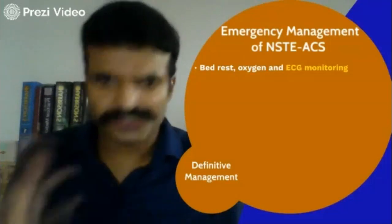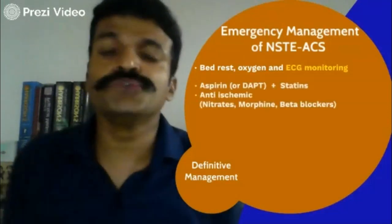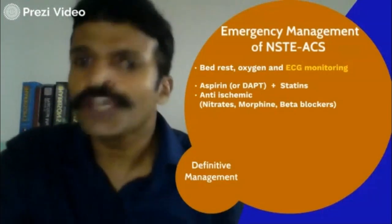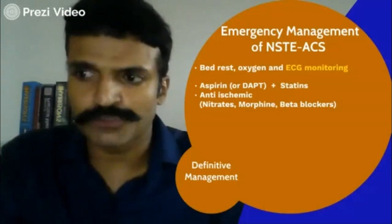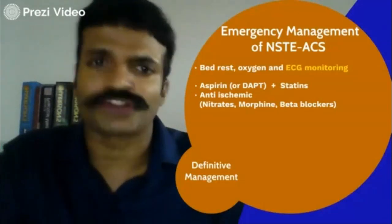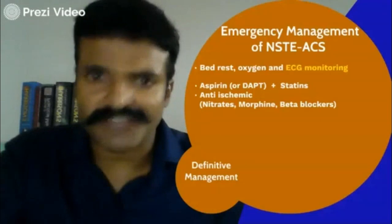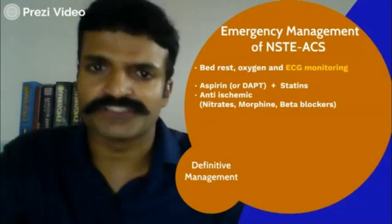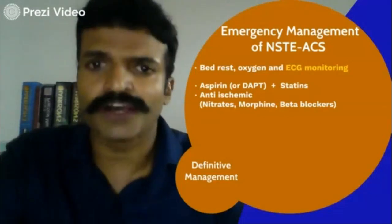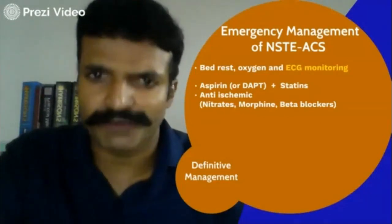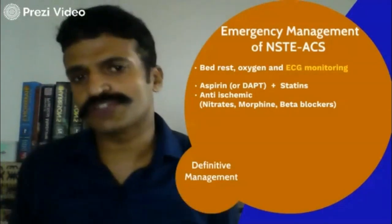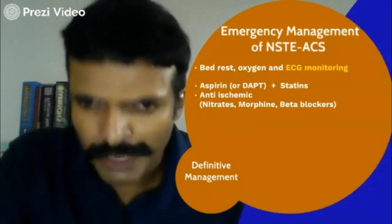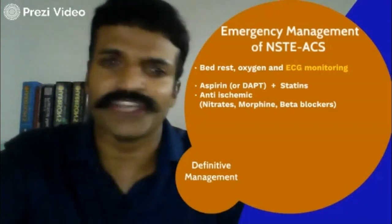The rest of the management is quite similar: oxygen, and you can use aspirin or dual antiplatelet agents. The dual antiplatelet agents we use are either clopidogrel or ticagrelor. Statins — atorvastatin, preferably 80 milligrams — are given to stabilize the plaque. Aspirin is the 325-milligram chewed tablet. We can also start anti-ischemic measures like beta blockers, morphine, or nitrates.